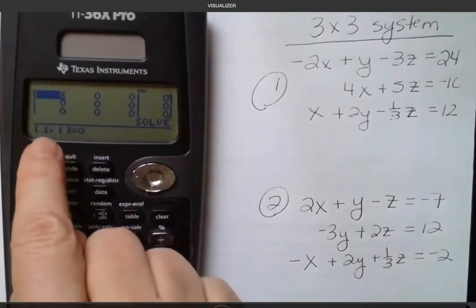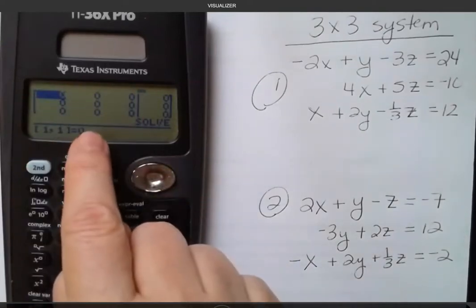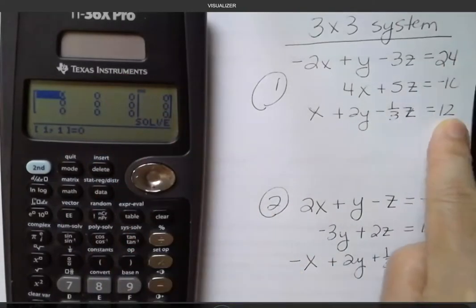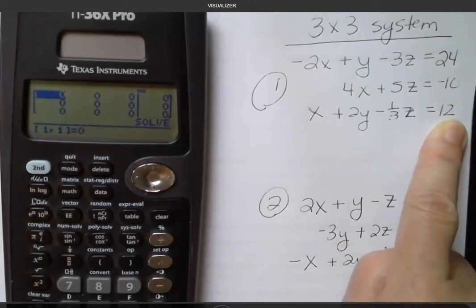The first column is your x values, the second column is your y values, the third column your z values, and the fourth column over here is the value that the equation equals.